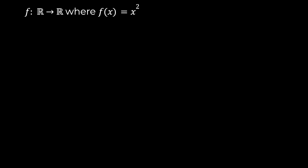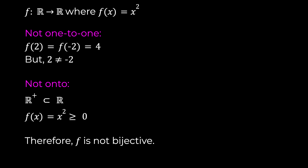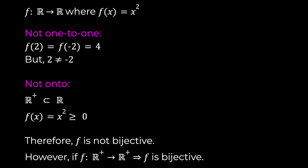Now let us explore these concepts further with some additional examples. Consider the function f: ℝ → ℝ where f(x) = x². This function is not one-to-one because f(2) equals f(−2), which equals 4, yet 2 does not equal −2. In addition, it is not onto ℝ because the range is the proper subset of non-negative numbers in ℝ rather than the entire codomain — elements of the domain will never map to negative elements in the codomain. However, if we modify f so that f: ℝ⁺ → ℝ⁺, mapping positive real numbers to positive real numbers, then it is both injective and surjective and hence bijective.